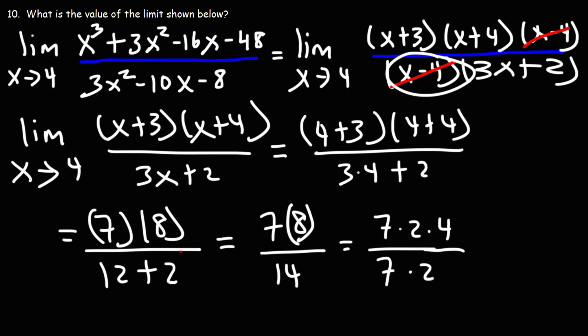So doing it this way, we could cancel a 7, and we could cancel a 2. So we're left with the final answer, which is 4. So that is the value of this entire limit.